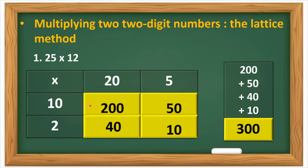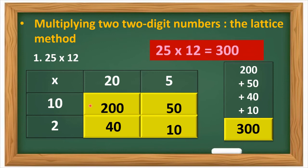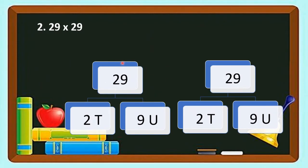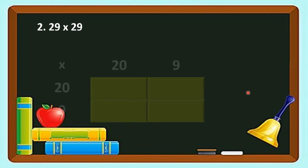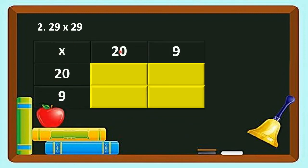So students, 25 multiplied by 12 is equal to 300. Next is 29 multiplied by 29. So we shall split the numbers into convenient parts using the lattice method. 29 we are going to split as 2 tens and 9 units, that is 20 and 9. Same way for the other 29, we split as 2 tens and 9 units. Now we are going to write in the lattice form.